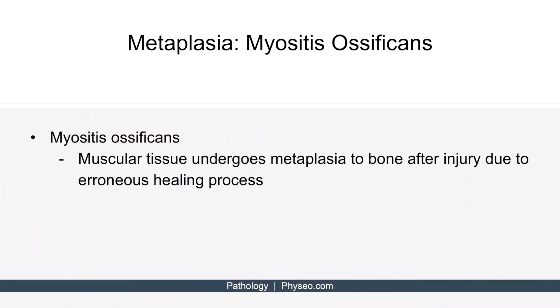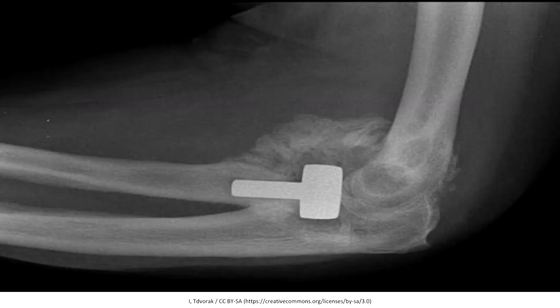The last example of metaplasia we'll discuss is myositis ossificans. This is a metaplasia of connective tissue in which muscular tissue undergoes metaplasia to become bone. This usually occurs after injury as part of an erroneous healing process. Here's an image of a patient who has undergone surgery — we can see the cloudy hyperdense region suggestive of bony changes in the healing muscle, meaning the muscle has essentially turned into bone.